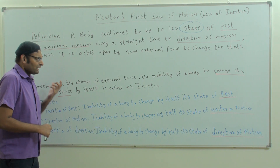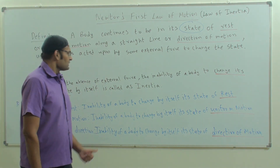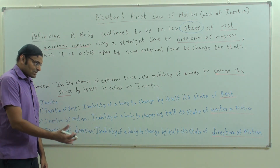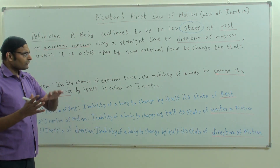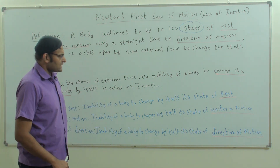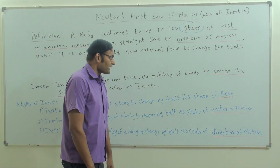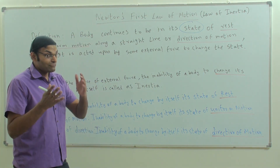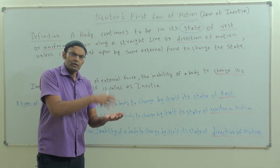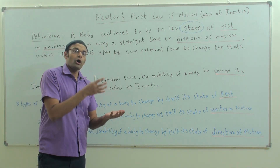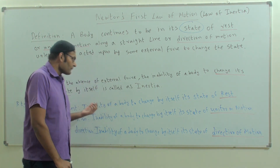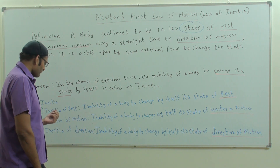So what is inertia? In the absence of an external force, the inability of a body to change its state by itself is called inertia. There are three types of inertia. The first is inertia of rest — the inability of a body to change by itself its state of rest. A box on a table continues to remain at rest unless an external force acts on it.